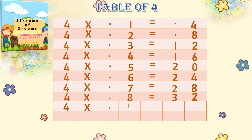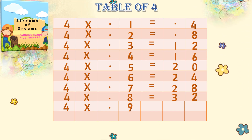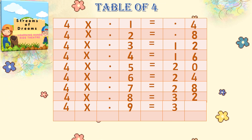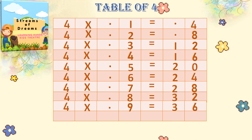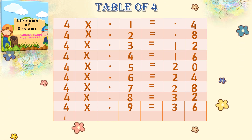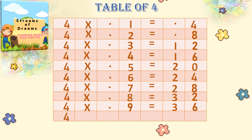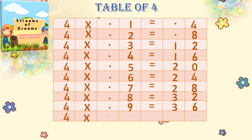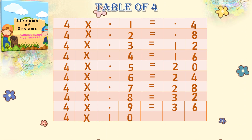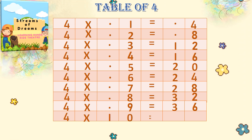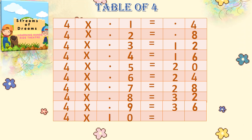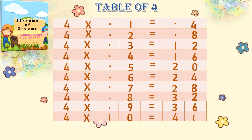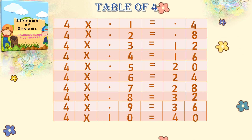4 into 9 is equal to 32 plus 4 — 36. 4 into 10 equals — 36 plus 4 is 40.